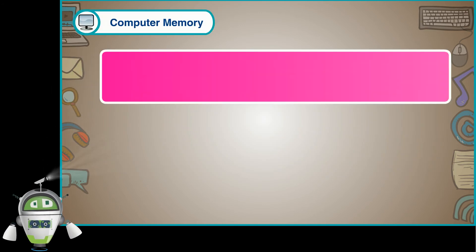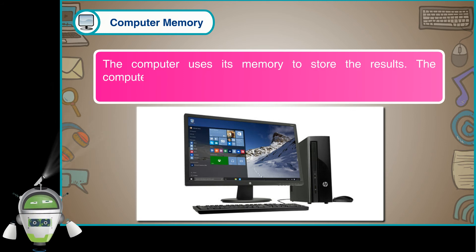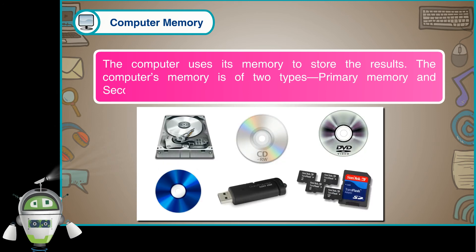Computer memory. The computer uses its memory to store the results. The computer's memory is of two types: Primary memory and secondary memory.